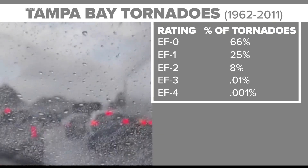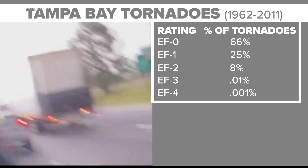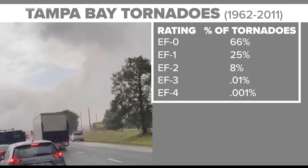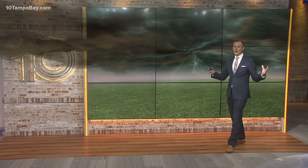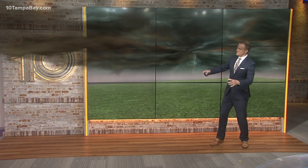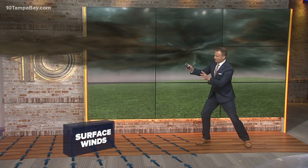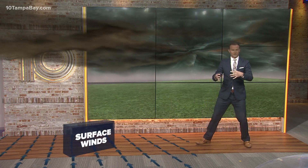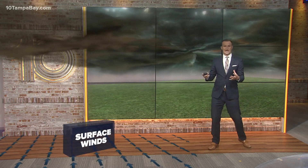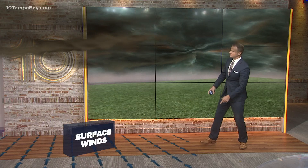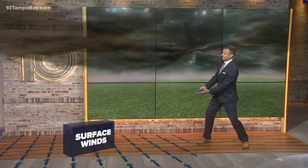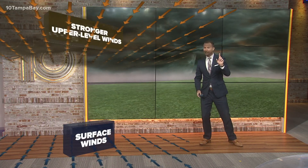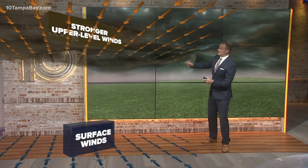So, how do these ferocious phenomena form? Let's go beneath the surface this morning and talk about how these things form. What you need are several different components, several different elements in the atmosphere. One of those — you need to have winds coming in a certain direction at the surface.